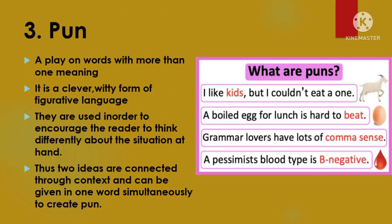The third type of ambiguity is pun. A pun means a word has more than one meaning, and is usually described as a play on words. It is a clever, witty form of figurative language that uses words within a sentence to convey another meaning. The pun is often used in the form of a joke, where words can mean more than one thing or sound like something else. For example: 'Writing with a broken pencil is pointless' or 'A boiled egg for lunch is hard to beat.' These sentences encourage the reader to think differently. In the third type of ambiguity, two ideas are connected through context and given in one word simultaneously.